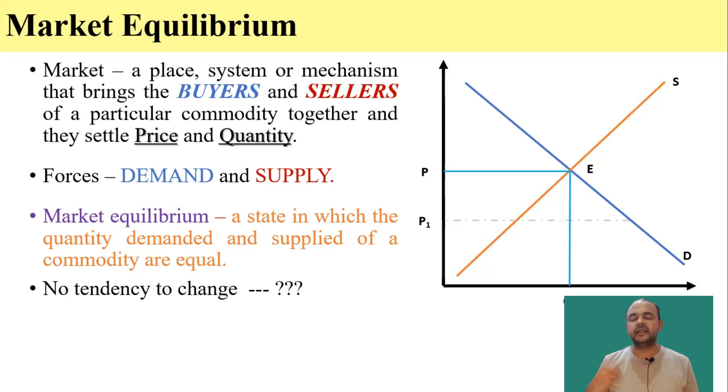So let's assume if the price settles at P1, what will happen? We can see that at price P1, the quantity supplied QS1 is insufficient to meet the quantity demanded QD1. Therefore, there will be shortage in the market.